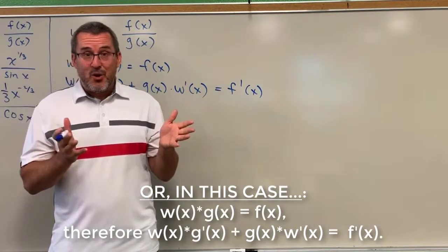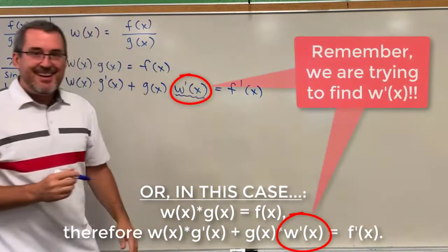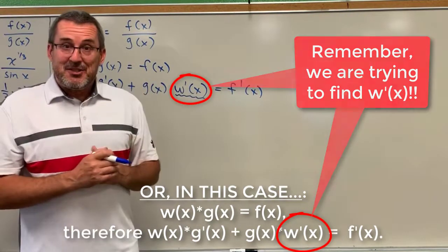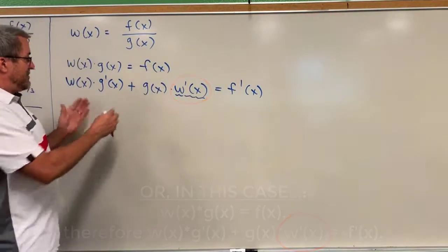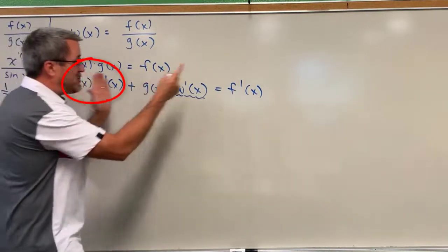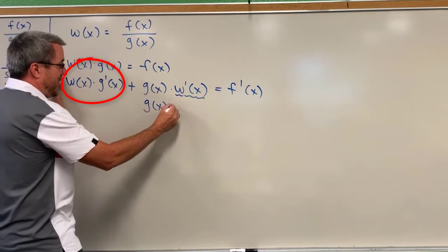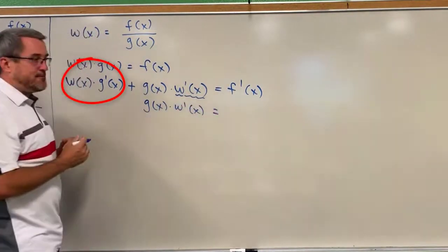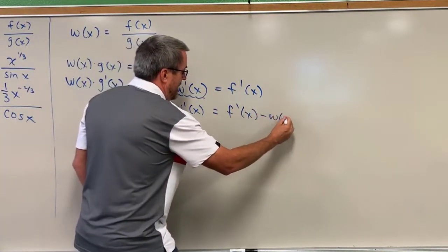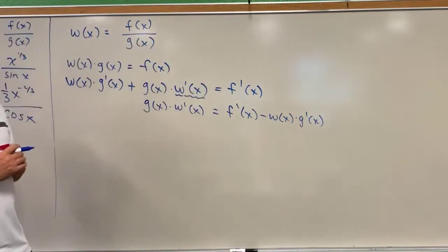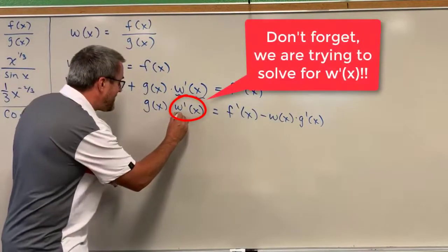Again, let's keep in mind our goal: to figure out what the derivative of w would be. Notice that the derivative of w is located in our work so far right there. Our next several steps are going to be to just algebraically isolate w prime of x. Step number one — this term right here, we can subtract it from both sides of the equation. If I subtract this term from the left side, I'll be left with g of x times w prime of x, and if I subtract this term from the right side, we'll have that.